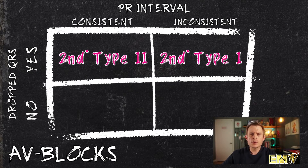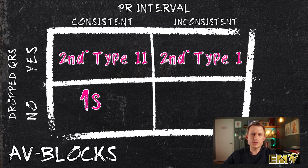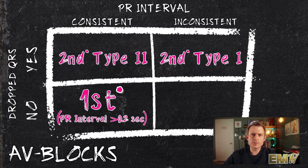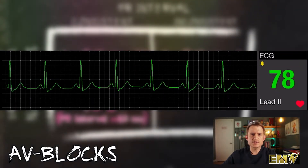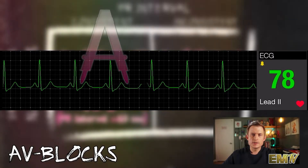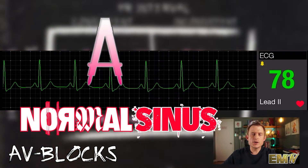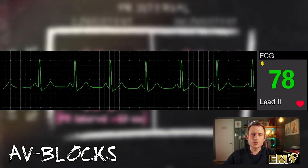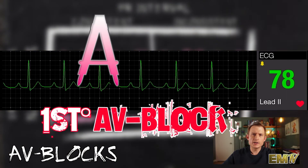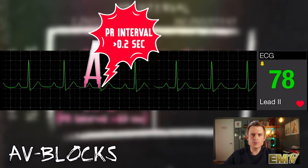For the bottom left corner, a rhythm with a consistent PR Interval and no drop in QRS complex is the first degree. There is a small caveat here: the PR Interval is consistent, but what makes this different from a sinus rhythm is the fact that the PR Interval is long — specifically longer than 0.2 seconds. Our normal sinus rhythm has a consistent PR Interval and does not drop any QRSs; however, if we measure the PR Interval, it is less than 0.2 seconds. When we compare this with a first degree AV block, the PR Interval here is greater than 0.2 seconds.